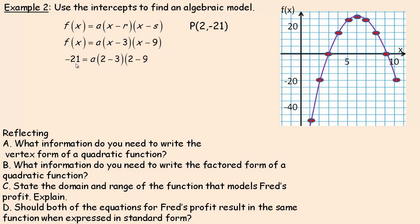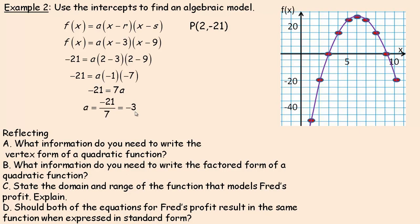Substituting: negative 21 equals A times (2 - 3) times (2 - 9). That gives A times negative 1 times negative 7, which is positive 7. So negative 21 equals 7A, and dividing by 7 gives A equals negative 3 — exactly the same stretch factor as the vertex form, as expected.